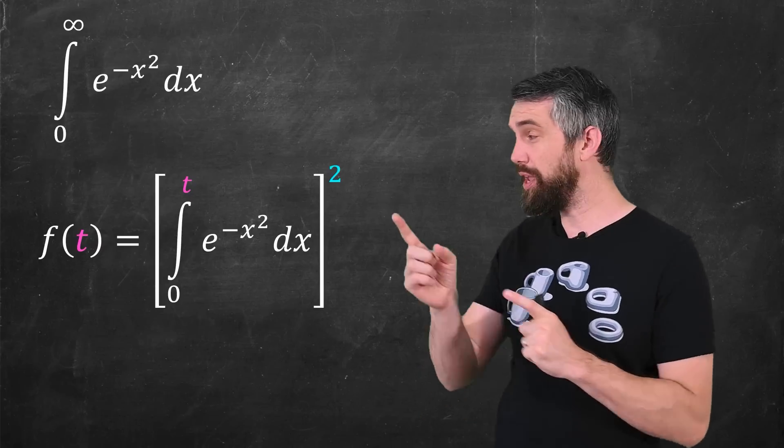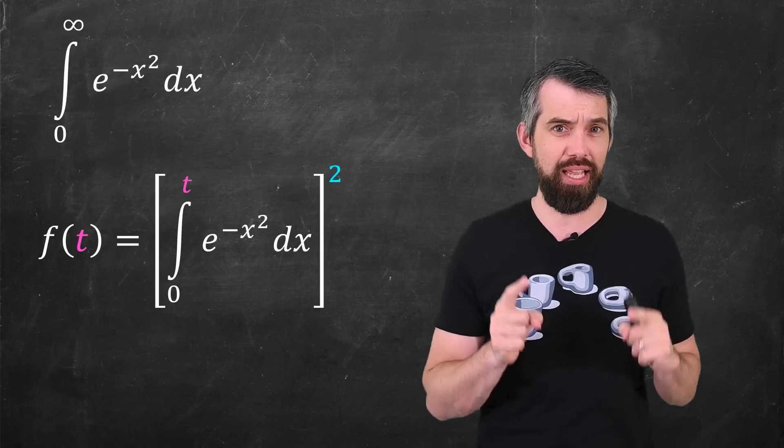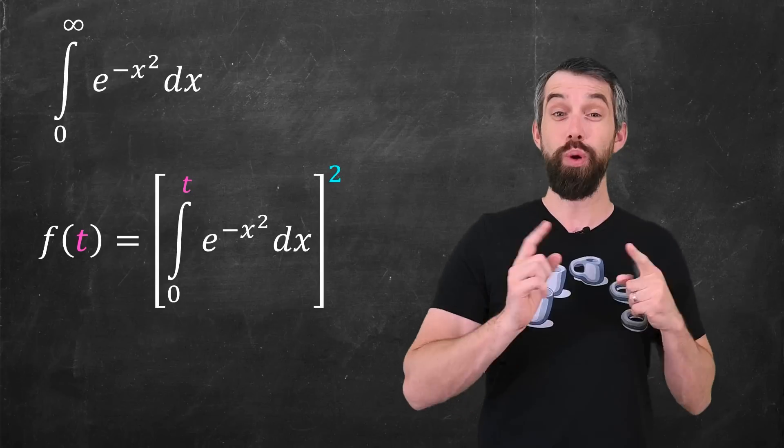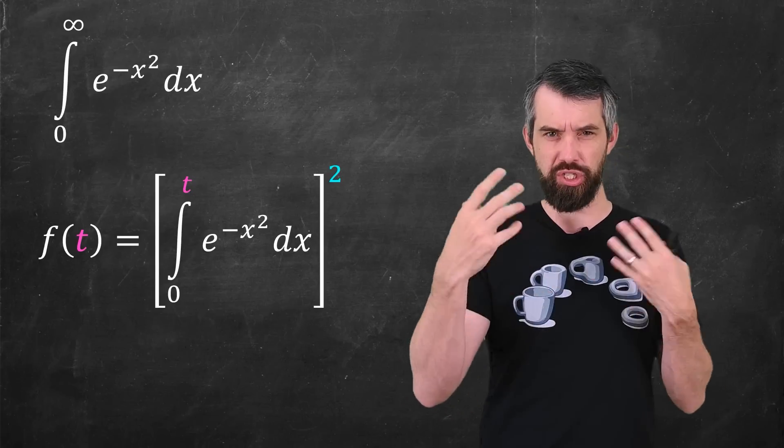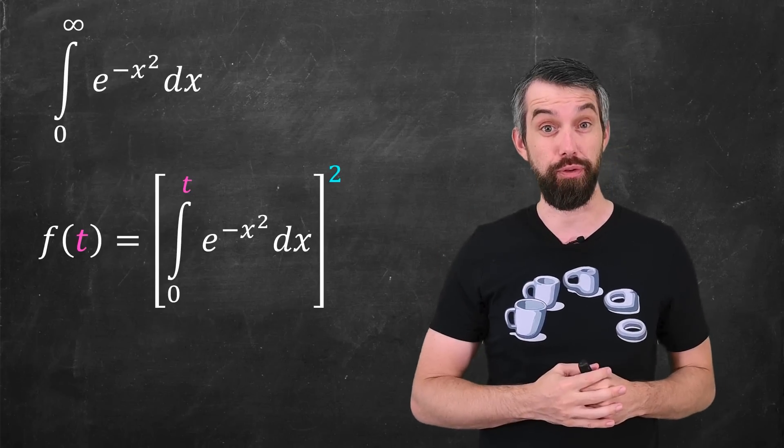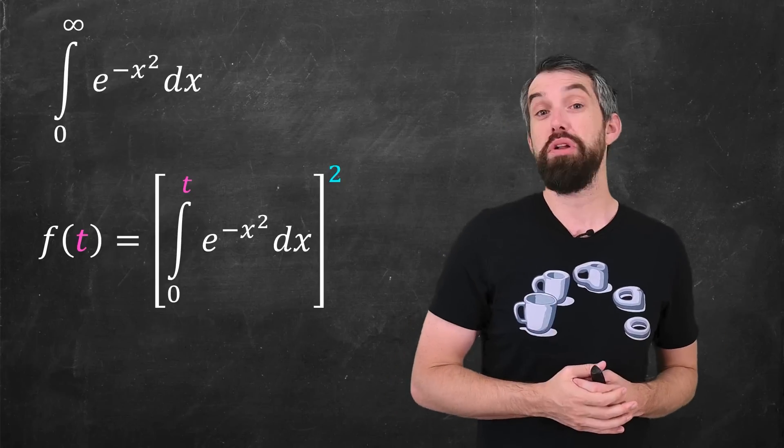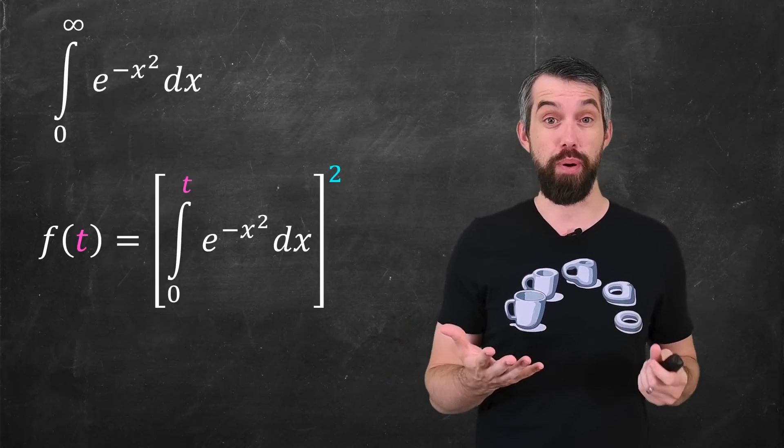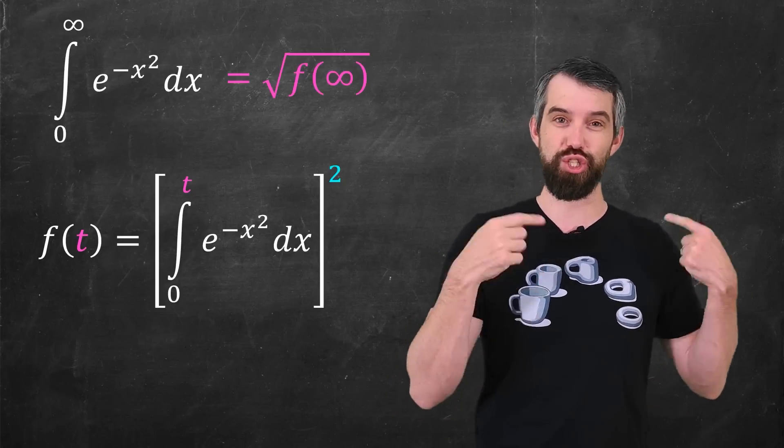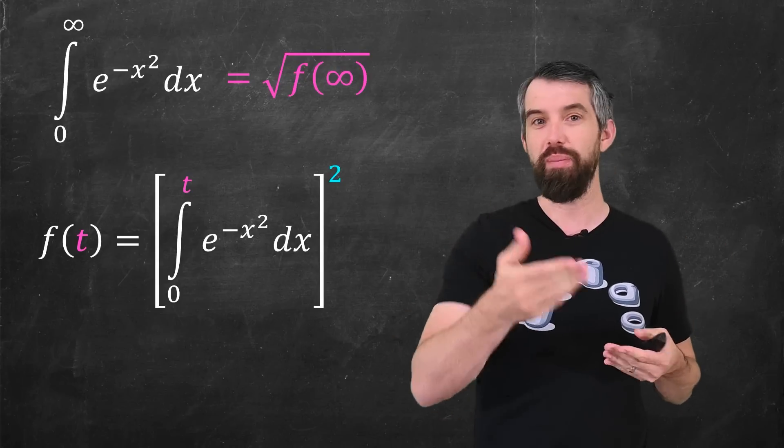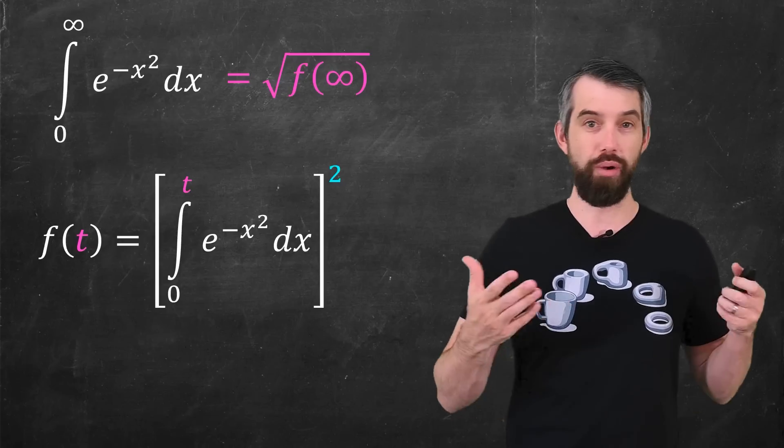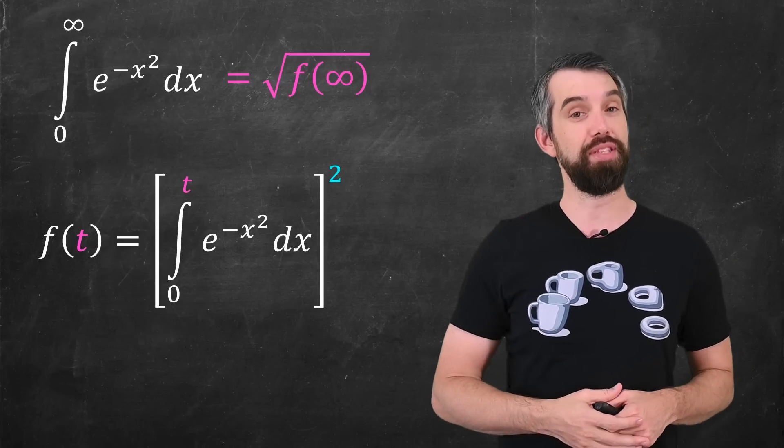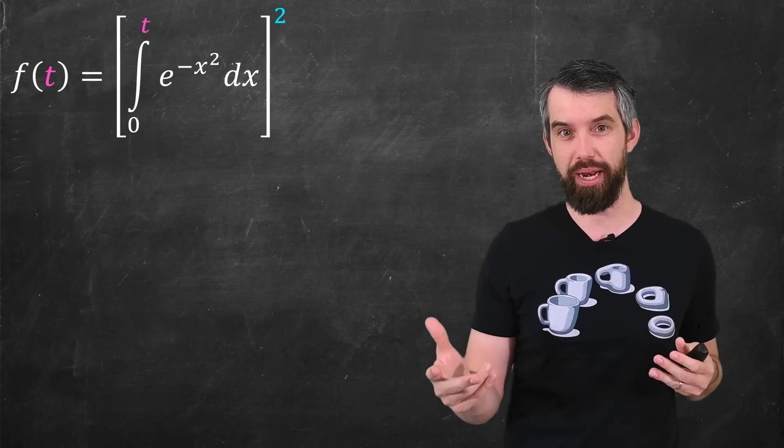And I also want to note that the f of t is this integral squared. We'll see just a little bit how the squared is going to come along and be useful for us. But for now I just want to note that the original problem we were posed with is nothing but the square root of this function in the limit as t goes to infinity.